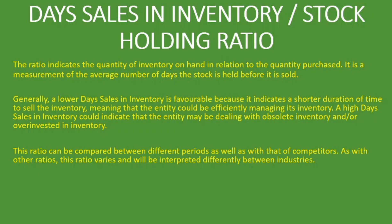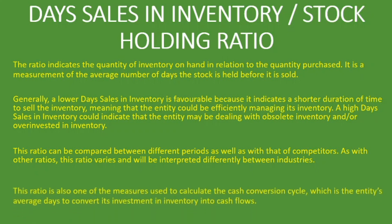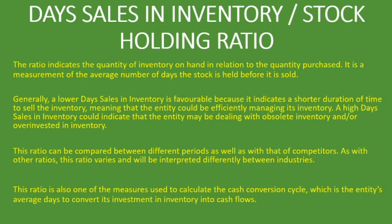As with other ratios, day sales in inventory varies and will be interpreted differently between industries — you cannot compare it between industries because it won't make sense. For instance, a supermarket or grocery store will have a very low ratio because they sell perishables very quickly. But a company that makes aeroplanes, like Airbus, will have a vastly different ratio, so you can only compare within the same industry or with your own previous periods.